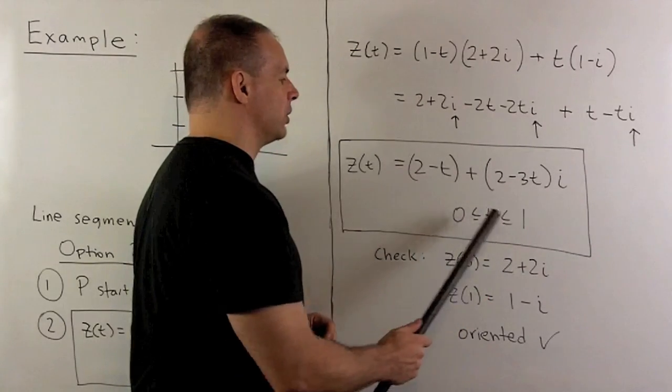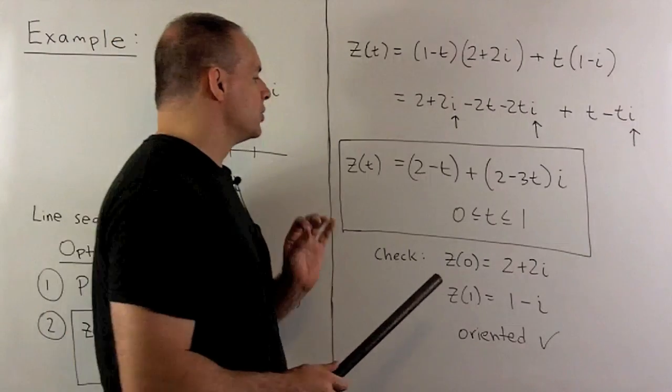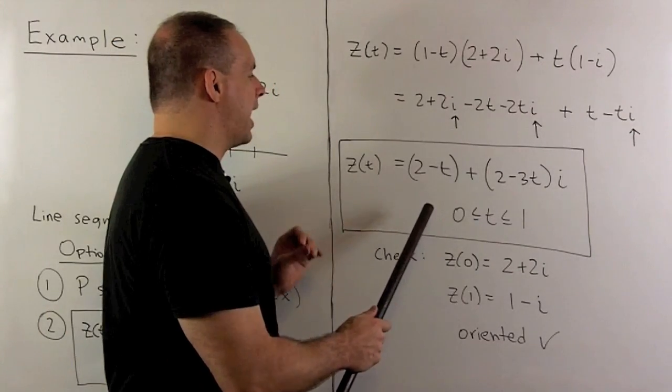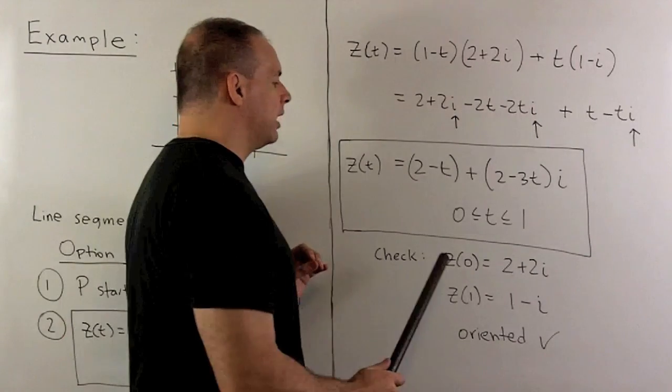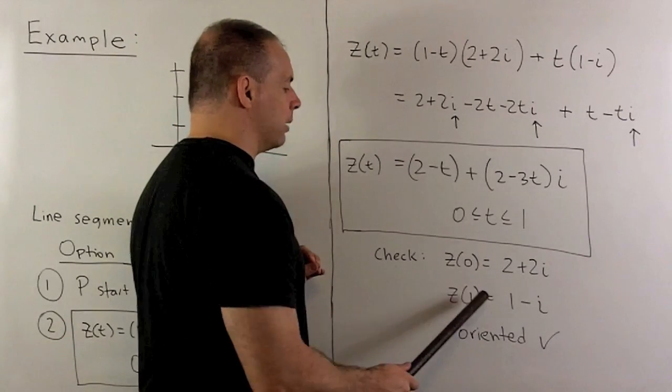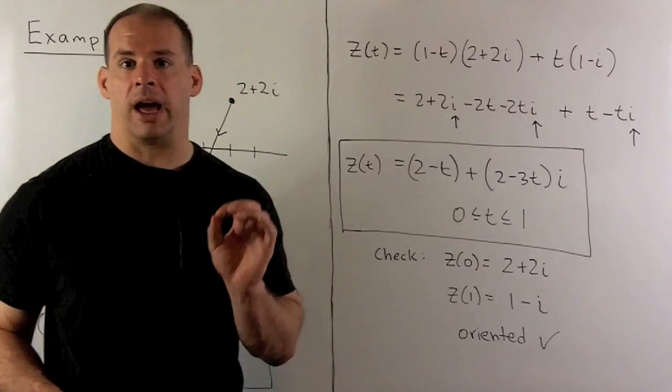Of course, we check. So, if I put 0 in, we're going to have 2 plus 2i. So, that's our start point. If I put 1 in, I get 1 minus i. And that's our end point. So, we note we're already oriented as we would like.